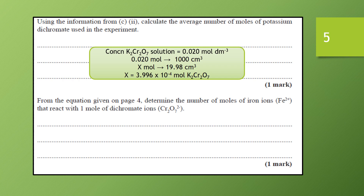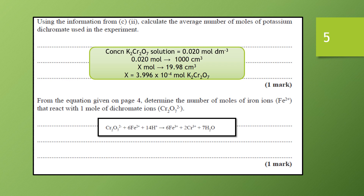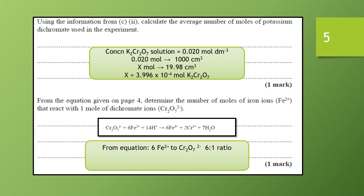From that number of moles of dichromate, we use the equation shown earlier. Looking at the mole ratio of dichromate to Fe²⁺: for each mole of dichromate we need six moles of iron(II). So using that ratio, the number of moles of Fe²⁺ is six times 3.996 × 10⁻⁴, which gives us 2.397 × 10⁻³ moles of Fe²⁺. Again, we don't round off too quickly because we'll use that in further calculations.